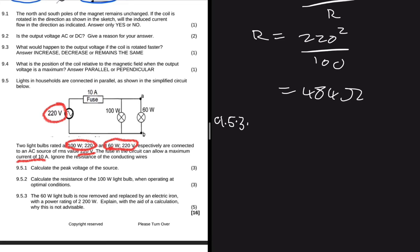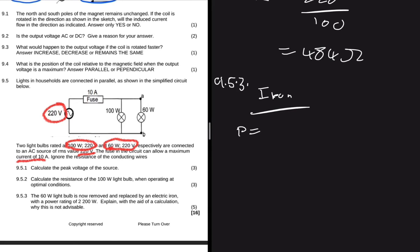And then it goes on to say with the power rating of 2200 watts. Makes sense, it's an iron, we are replacing a bulb. Explain with the aid of a calculation why this is not advisable. Yeah so now what I'm thinking is this iron has a power rating of 2200. For the iron let's just jot down some information. For the iron we have a power of 2200 watts, and then the iron will experience a voltage of 220 volts because it will be parallel to the 100 watt bulb which is receiving 220 volts, because our power source can only give us 220 volts.